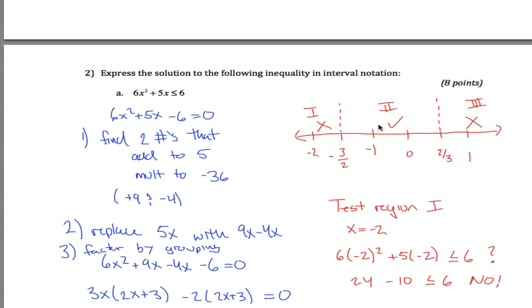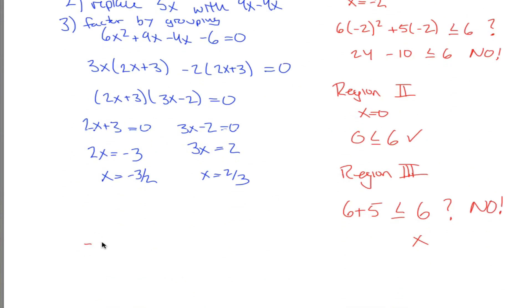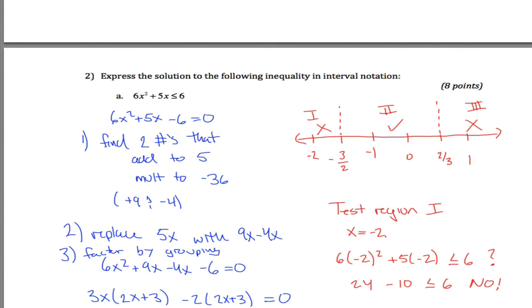So all my solutions lie in region 2. If I want to express all the numbers in region 2 in interval notation, I would say it's everything from negative 3 halves up to 2 thirds. However, I want to include those two end points. So I would say it's everything from negative 3 halves up to 2 thirds. However, to include those end points, I'm going to write my answer in brackets, not in parentheses. So right here is my answer. I guess that's the end of the quiz.